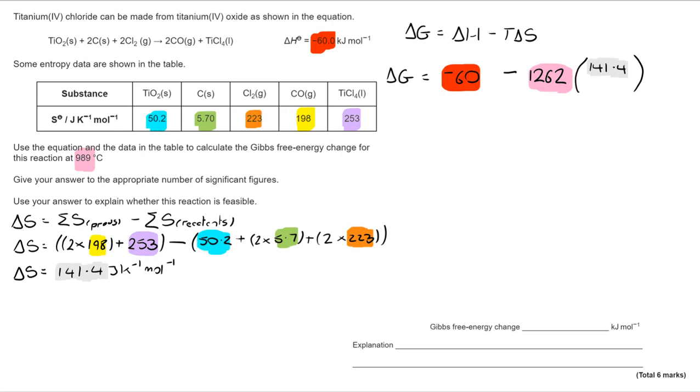Now once I do that I can start to put my figures in. I've got my negative 60 as my enthalpy change. I've got my temperature. Now they gave it to you in Celsius, you need to add 273 to that, so it's 1262.